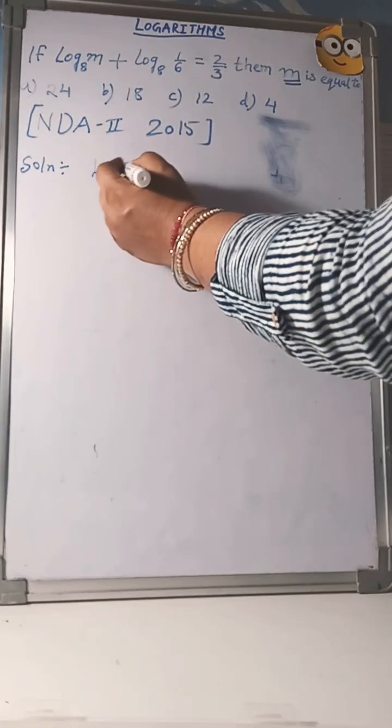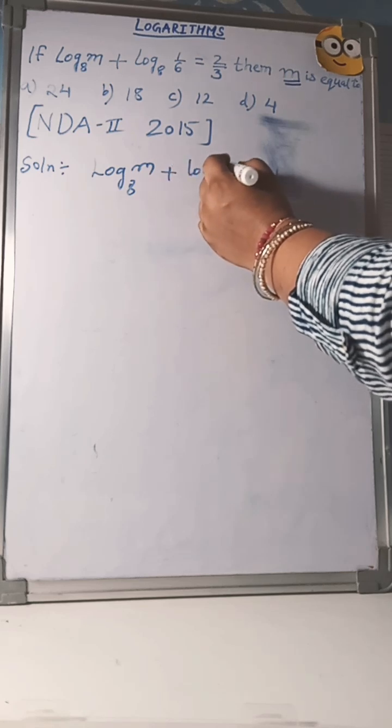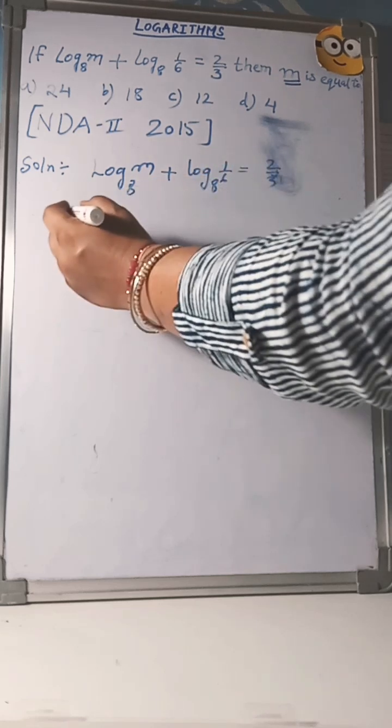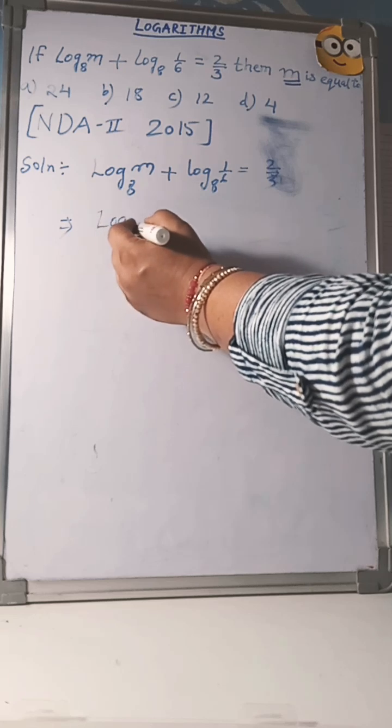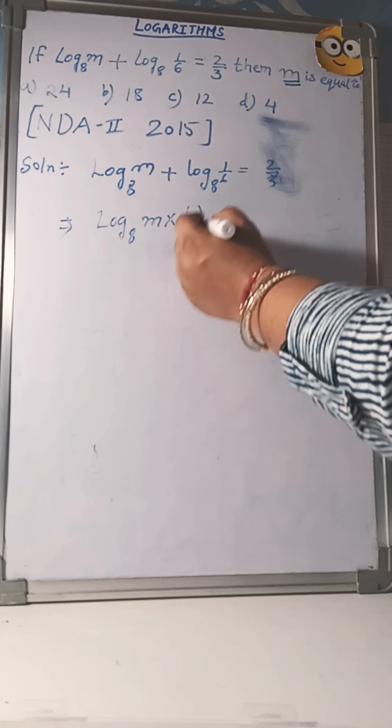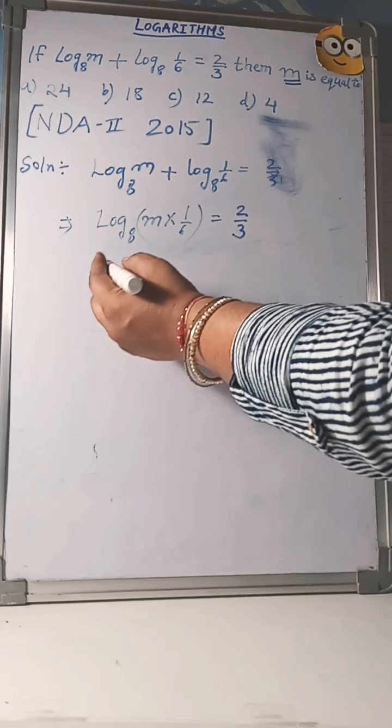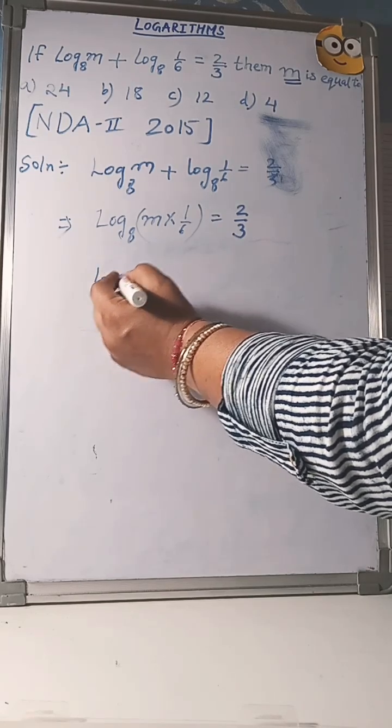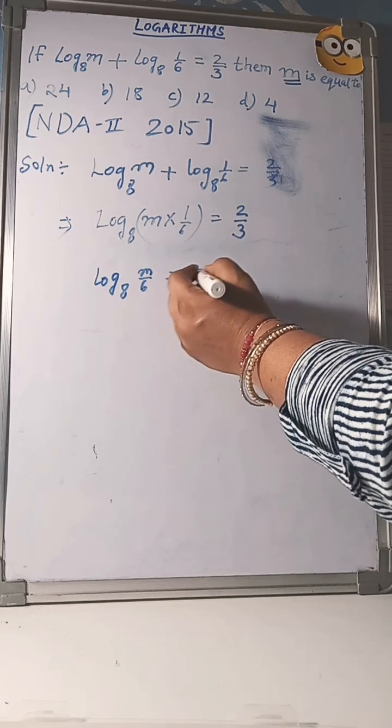See, log m to the base 8 plus log 1/6 to the base 8 equals 2/3. Now using the product law of logarithms, log base 8 of m times 1/6 equals 2/3. Log base 8 of m/6 equals 2/3.